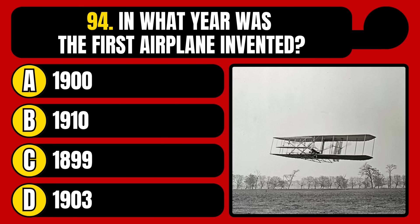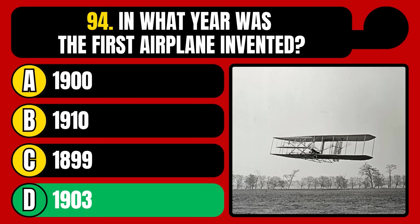In what year was the first airplane invented? 1900, 1910, 1899, or 1903? The correct answer is option D, 1903.